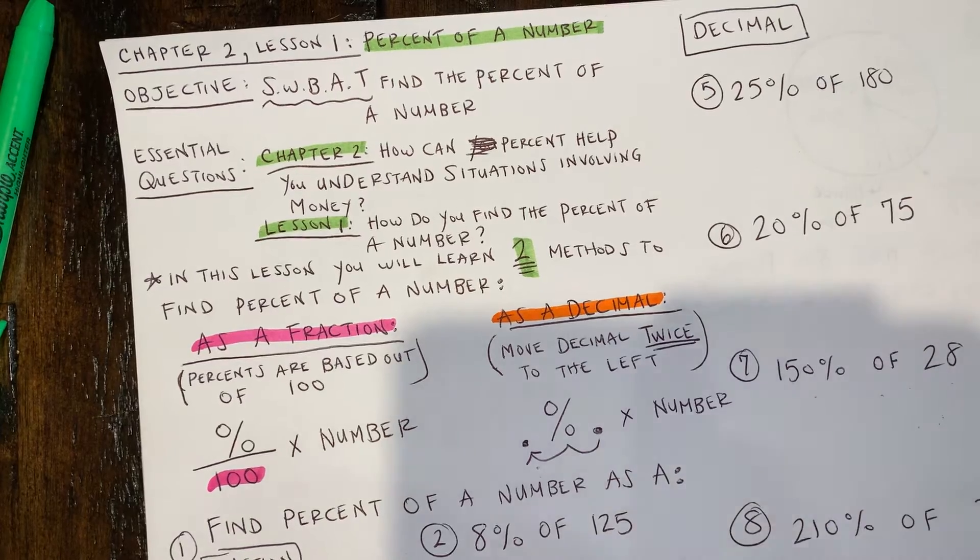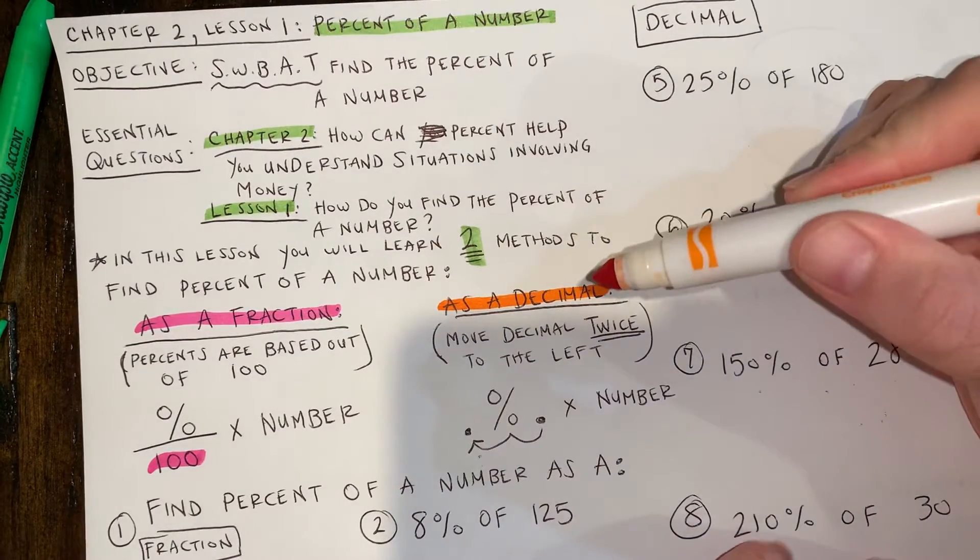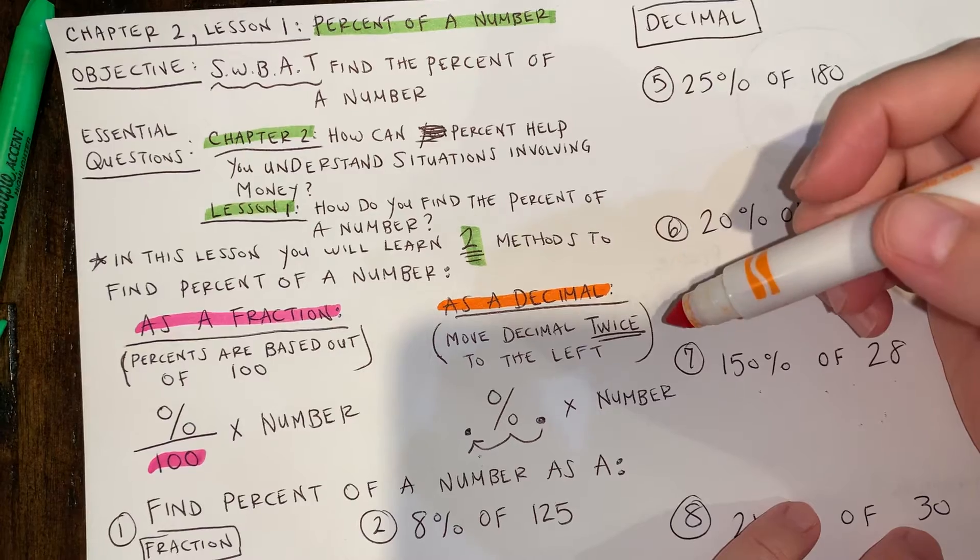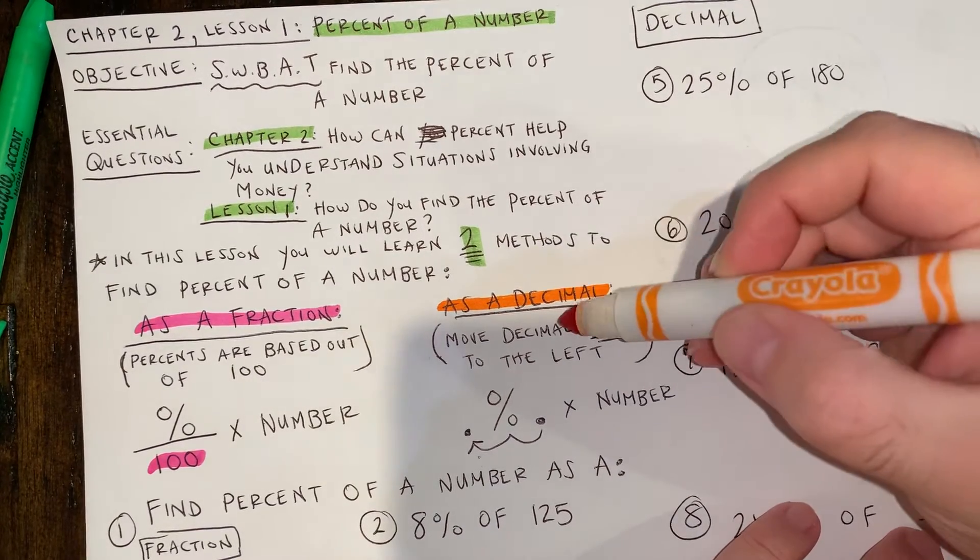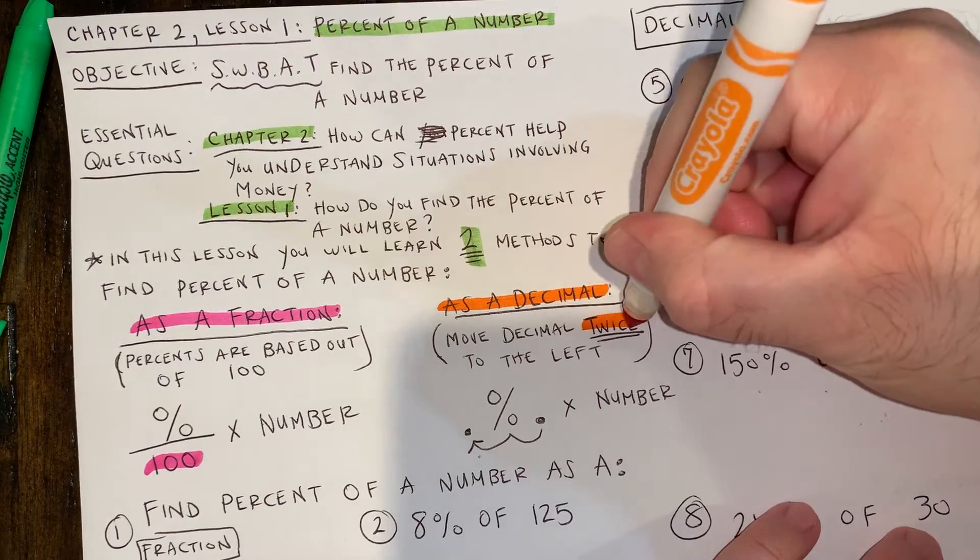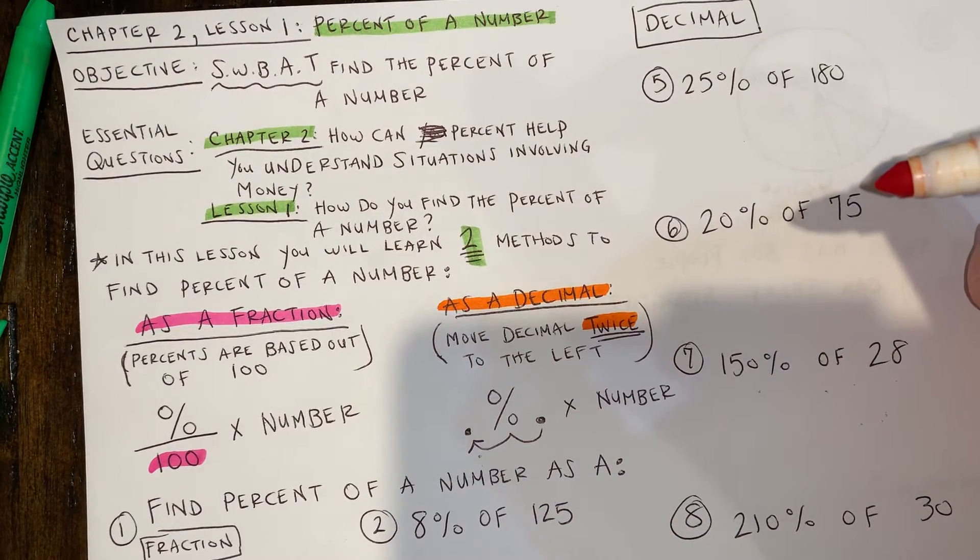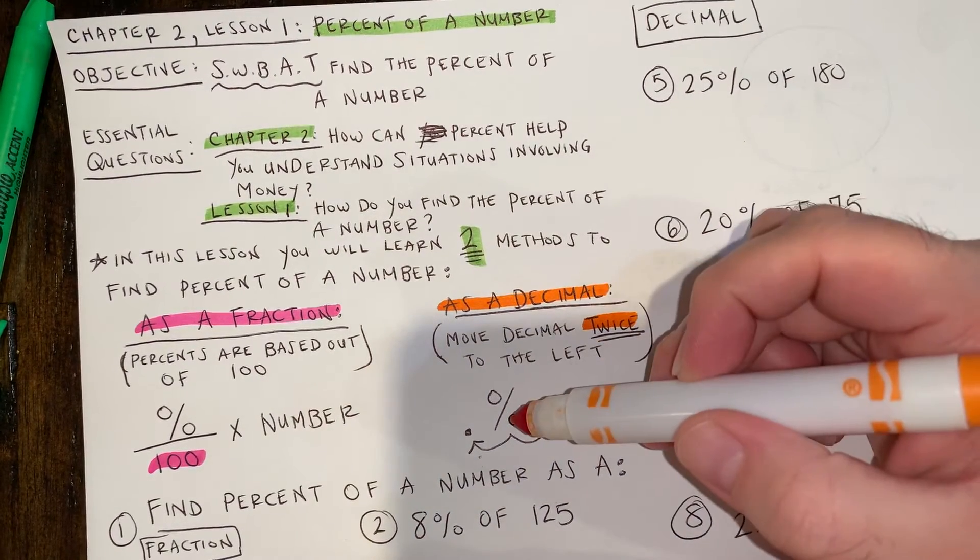Then in the other video, we're going to be learning how to do percent as a decimal. So what you need to know is that when you're using percent as a decimal, you're going to be moving your decimal twice to the left.